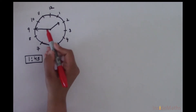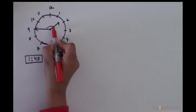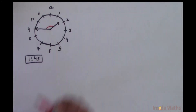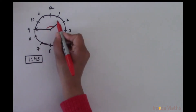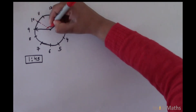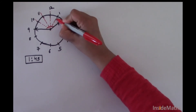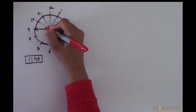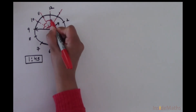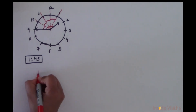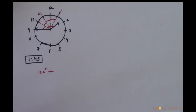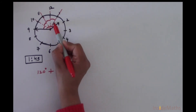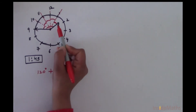Now we have to find the angle between these two hands when the time is 1:45. That means the minute hand is at 9 and the hour hand is between 1 and 2. To find this angle, we divide the intervals — each angle is 30 degrees — so this gives us 30 + 30 + 30, which is 120 degrees, plus a remaining angle.